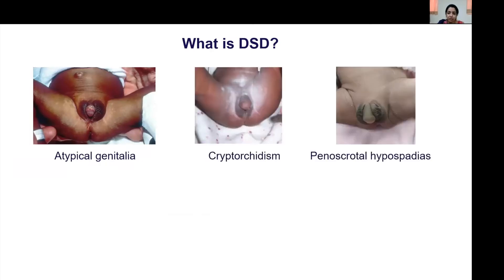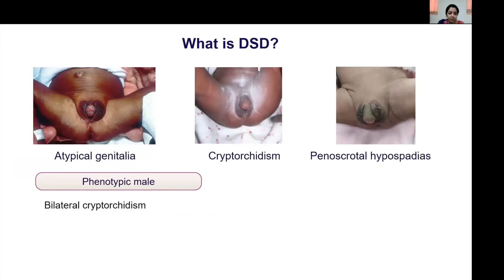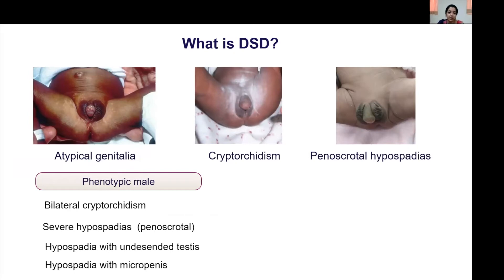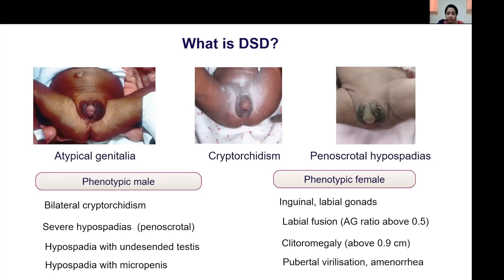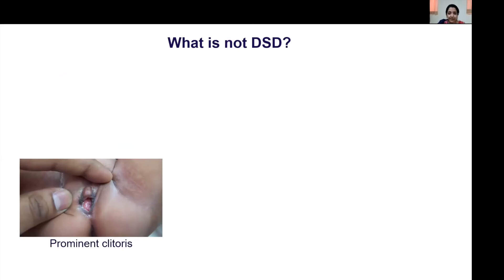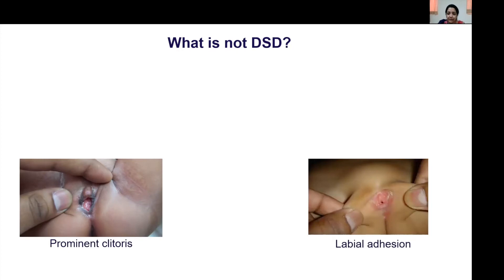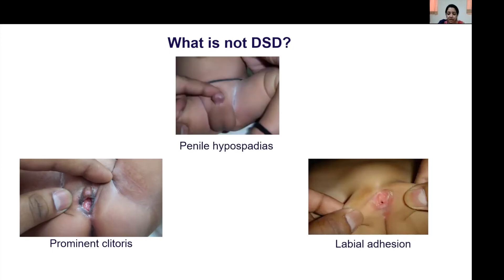DSD comprises atypical genitalia, cryptorchidism, penoscrotal hypospadias. In a phenotypic male, bilateral cryptorchidism, severe hypospadias (penoscrotal), hypospadias with undescended testis, or hypospadias with micropenis constitute DSD. In a phenotypic female, inguinal or labial gonads, labial fusion with anogenital ratio above 0.5, clitoromegaly (phallic length >0.9 cm), or pubertal virilization or amenorrhea comprise DSD. Certain normal variants — such as prominent clitoris in premature neonates, labializations, and penile hypospadias — do not require further evaluation.